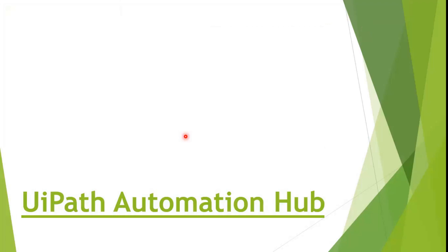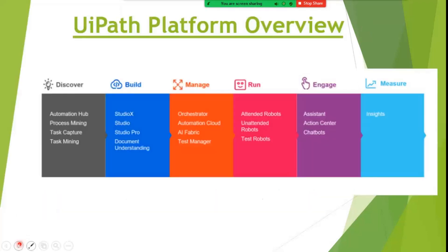Before that, we would have seen this particular phase slide of all the UiPath products, which has all the phases and the products therein — starting from the Discover phase, Build, Manage, Run, Engage, and Measure. Automation Hub falls in the Discover phase, along with Process Mining, Task Capture, and Task Mining.